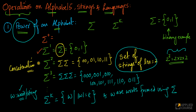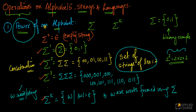We have defined sigma power 1, 2, 3, and k, but what is sigma power 0? Sigma power 0 is epsilon. As we discussed in previous videos when we learned the definition of alphabet, string, and language, epsilon is the standard symbol for the empty string. Some books may also use other symbols, but epsilon is the most popular one.